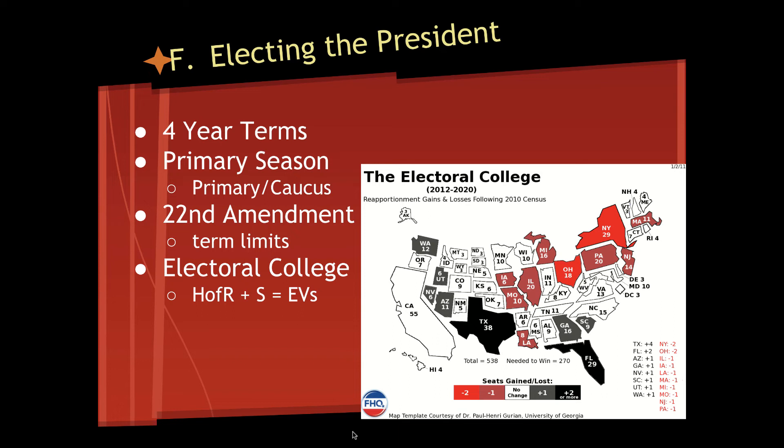It wasn't until the passage of the 22nd Amendment that presidential terms were limited to two. Before that, it was a customary two-term limit set by George Washington. It wasn't until FDR in the 1930s and 1940s won an unprecedented third and fourth term that we saw the need for people to say this president doesn't need to serve multiple terms.